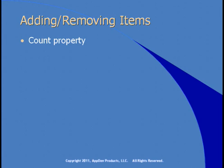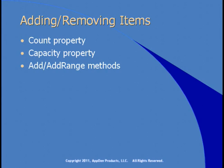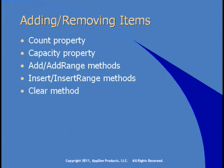Let's look at methods of the List class for adding and removing items. There's a count property so you can tell how many items are in the list, and a capacity property to tell how big the internal array is. The add method adds one item at the end; AddRange adds a group of items stored in an array. Insert lets you insert at a particular location. InsertRange inserts a range at a location. The clear method removes everything, and TrimExcess trims the internal array size to match the count — a good memory saving tool.